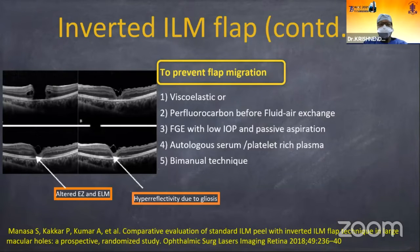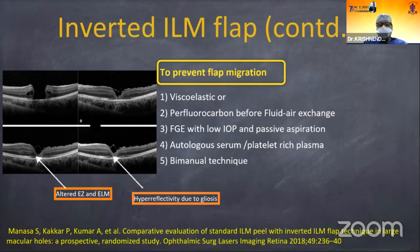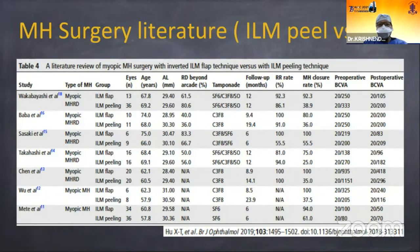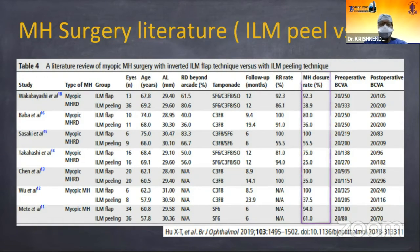To keep the inverted flap in position, we can use viscoelastic material, perfluorocarbon, or lower the intraocular pressure by decreasing the bottle height or reducing the infusion pressure in mmHg. Literature shows there is a better outcome with the inverted flap technique rather than conventional ILM peeling.